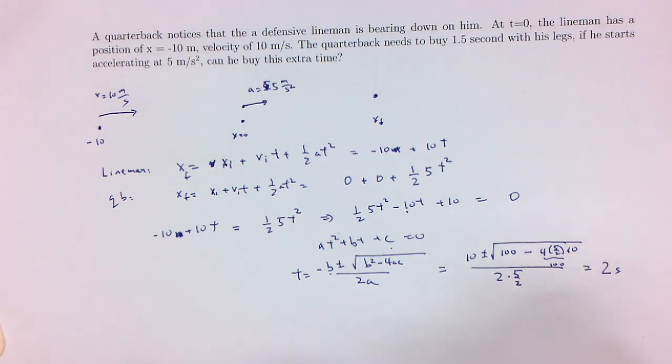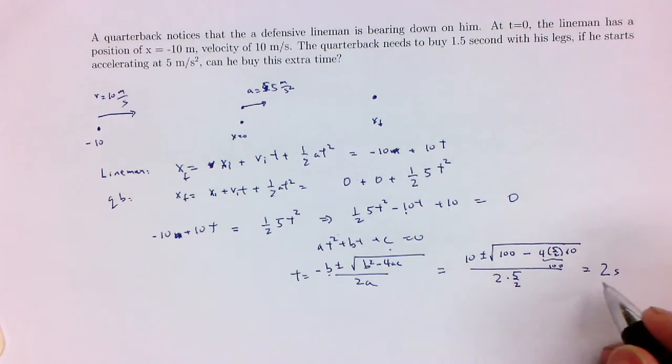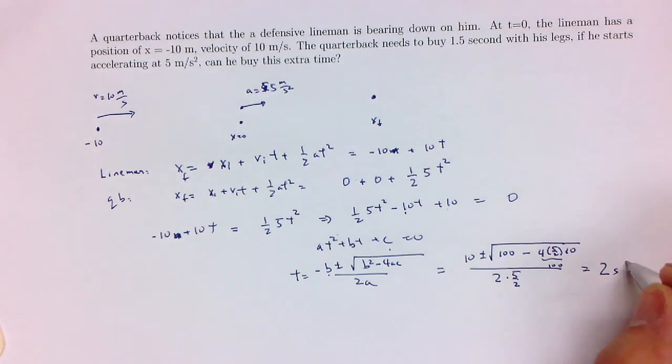So that's when they will meet, which is bigger than 1.5 seconds, which is what the quarterback required. So the quarterback bought that extra time and got away from the lineman.